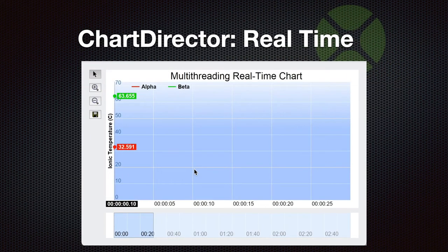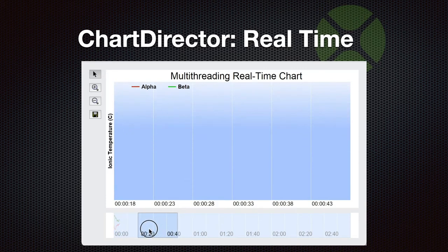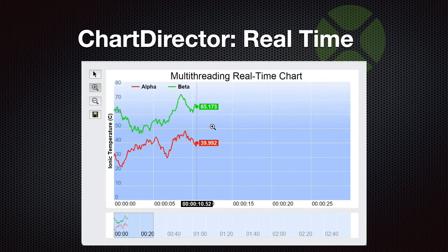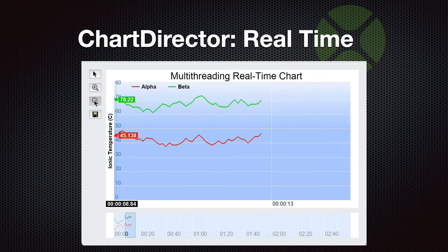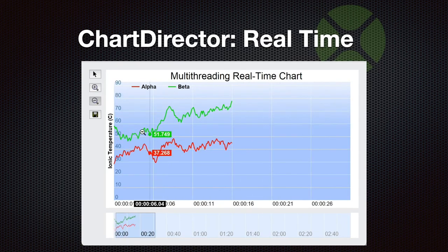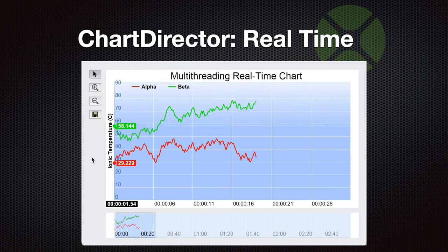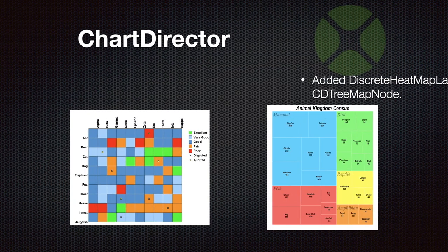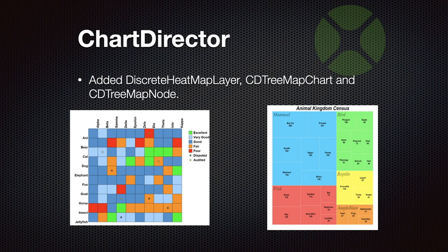We worked on ChartDirector in the last year and got support for real-time charts. Measurement values can come into your application and you can show a live chart updating several times a second with new data. You can scroll in the chart, zoom in to different areas, and of course it auto-scrolls when it reaches the end. We also got new chart types — a discrete heatmap layer chart and a treemap chart — in addition to all the other 29 chart types we already have.